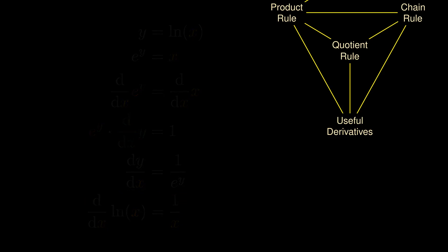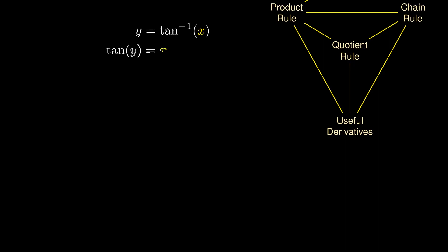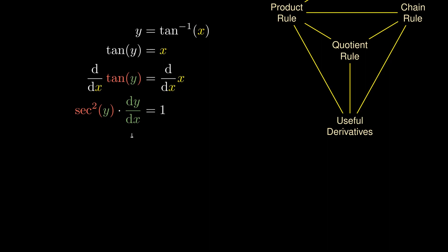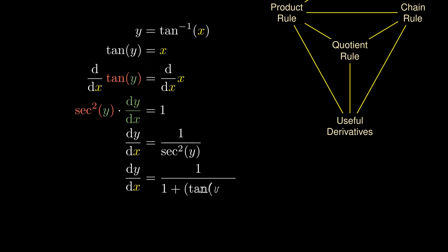We can play the same game with the arctangent of x. We apply tangent on both sides, then differentiate both sides with respect to x. Applying the chain rule tells us that dy/dx is 1 over secant² of y, and by a trigonometric identity this is 1 over 1 plus the square of the tangent. Since the tangent of y is x, the derivative of arctangent of x is simply 1 over 1 plus x².